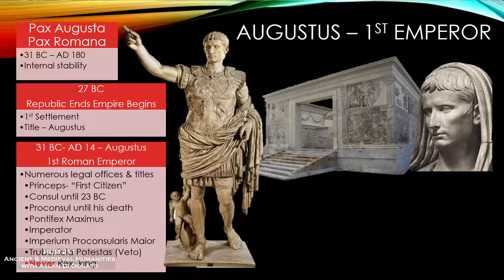Other than that, there are still fully functioning consulships, proconsulships, and censorships — all the other offices are still there, and you still have elections. Everything looks like a republic. Augustus himself holds consulship until 23 BC, continues to hold the proconsulship throughout the rest of his life, and holds the Pontifex Maximus — the position as high priest over the Roman state — which becomes the policy of emperors throughout the empire.